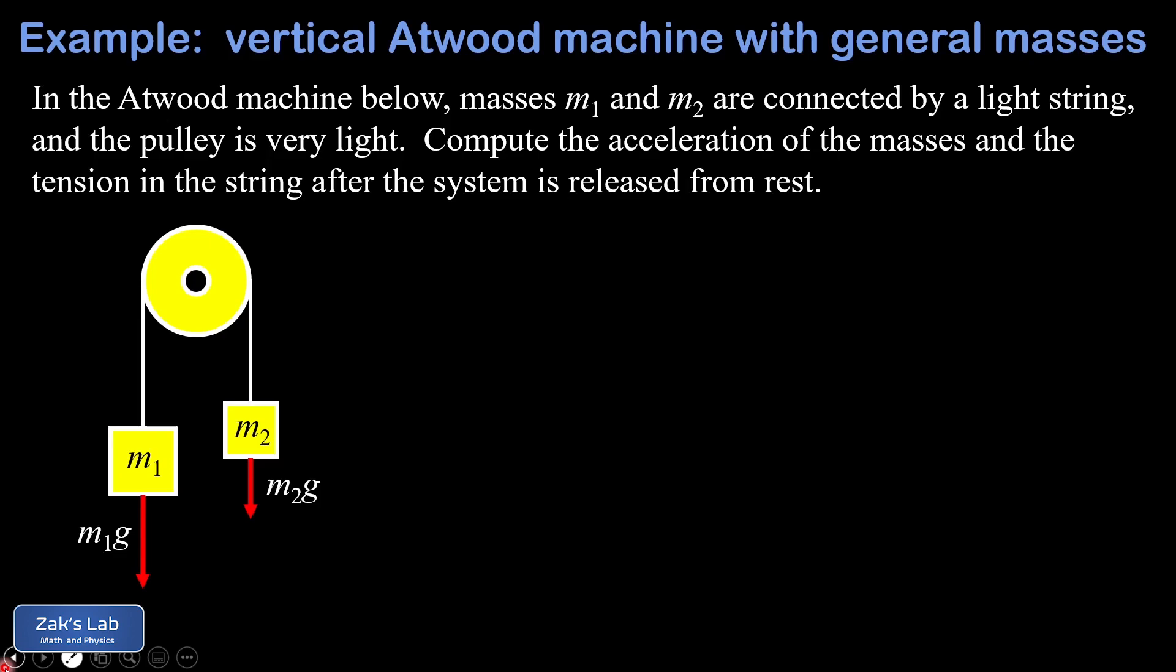If you plug numbers in and m1 is actually smaller than m2, all the formulas still work, but we have to assume a specific direction of motion as we're setting up the qualitative things in our diagram and equations. Notice I drew the weight vector longer for m1 based on the assumption that it's the bigger mass.